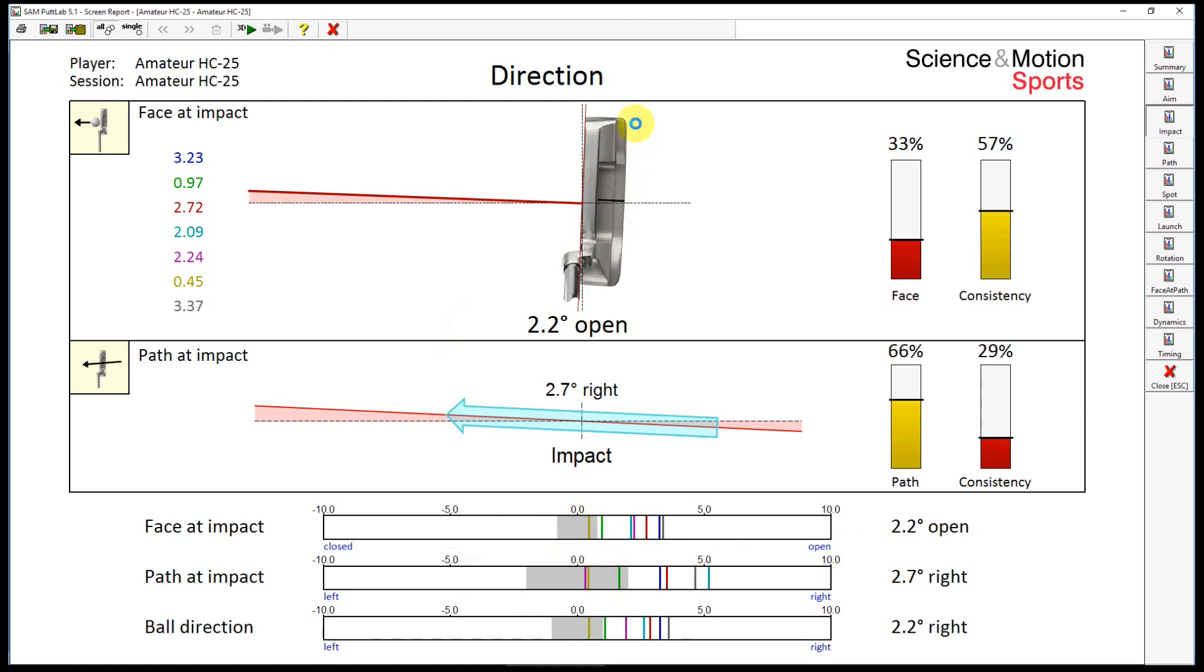Now, because we know that face angle contributes 83% to the direction of the ball, and we know that path angle contributes the rest, which is 17% to the direction of the ball, we can then calculate for each putt the resulting direction of the ball, which is shown in the lower bar graph.